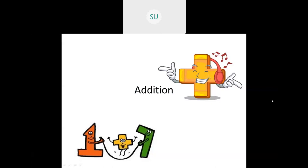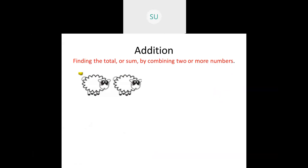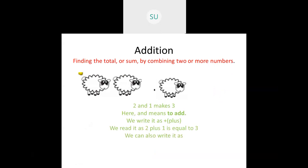First we saw what is addition. So what is the meaning of addition? Combining two or more numbers together to find a total or a sum. We saw a few different methods. I showed you the example of these sheep. There were two sheep in a farm and one more sheep joined them. To find how many sheep were there in total, we counted all the sheep together. Two and one makes three. So two plus one is three. You can also write it vertically: two plus one is equal to three.